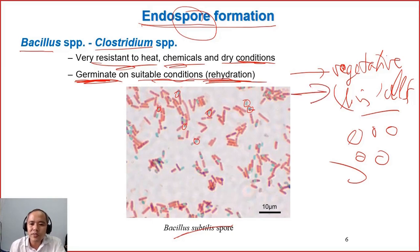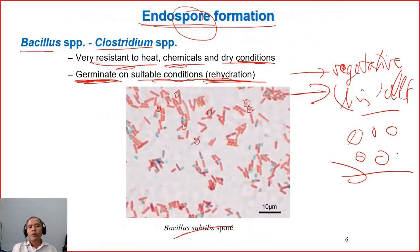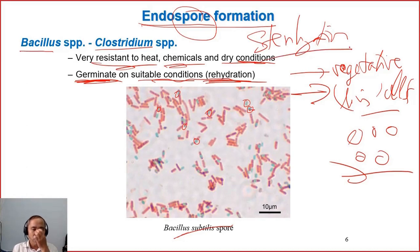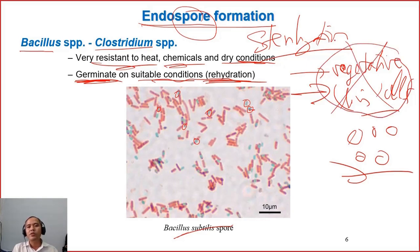The spores are like an egg. But when they meet suitable conditions, they germinate into living cells and will multiply in number. So when we do sterilization, we have to calculate a process to destroy the spores, not just the vegetative cells, because vegetative cells are quite simple to destroy, but the spores are much more difficult to destroy.